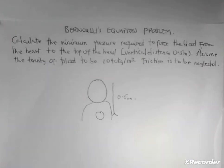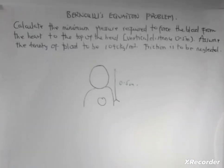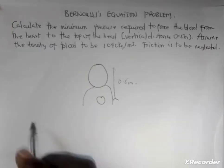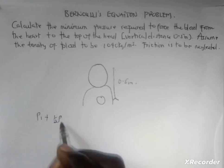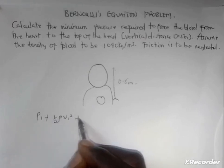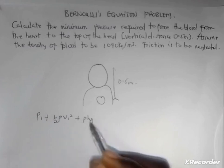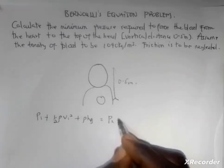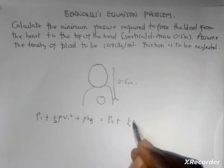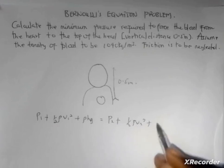How do we do this as an application of Bernoulli's equation? First we state Bernoulli's equation: P1 + ½ρv1² + ρh1g equals P2 + ½ρv2² + ρh2g.